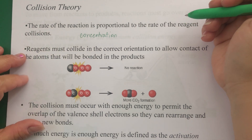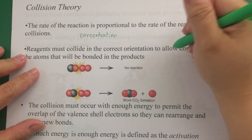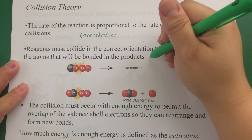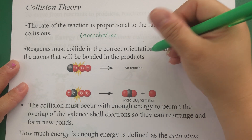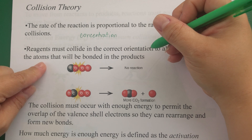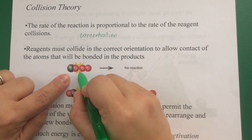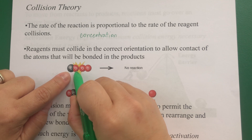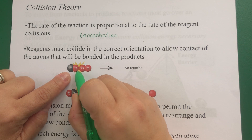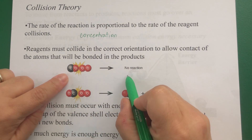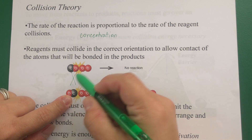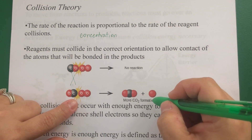The second postulate says that reagents must collide in the correct orientation to allow contact of the atoms that will be bonded in the products. For example, with the carbon monoxide molecule, if it collides on the oxygen side, that does not result in a reaction. The carbon needs to be the one colliding — see how the molecule is flipped with the oxygen in order to get the products.